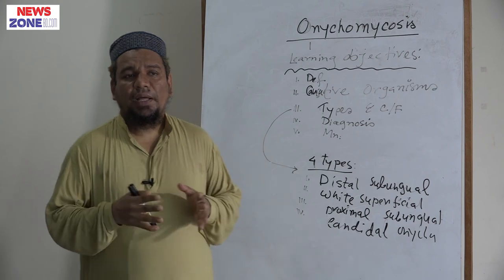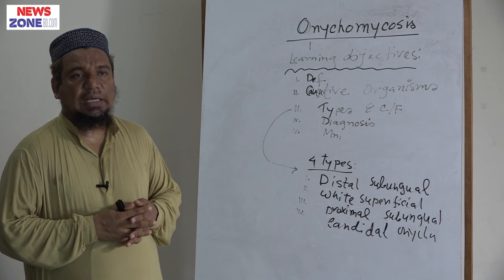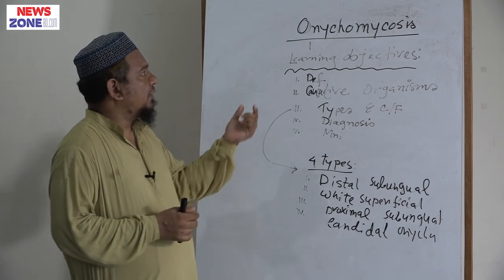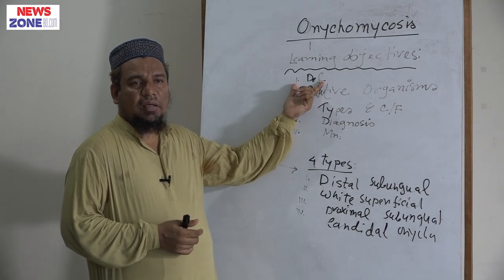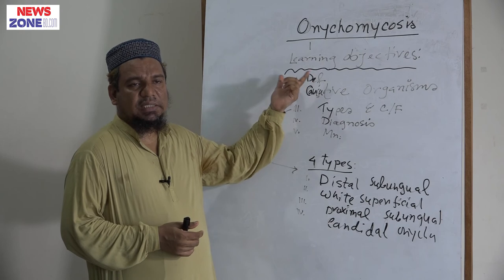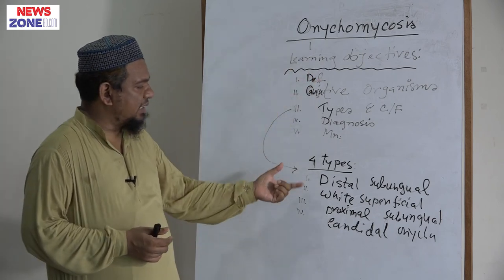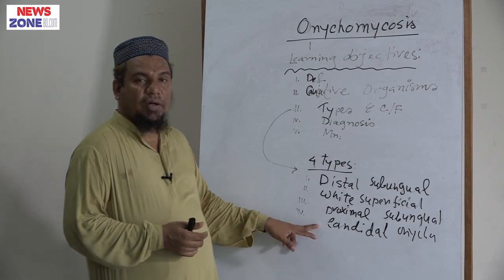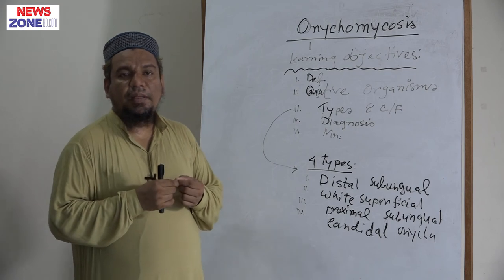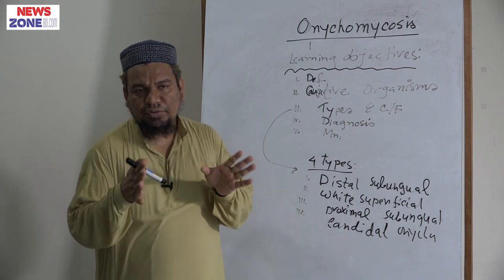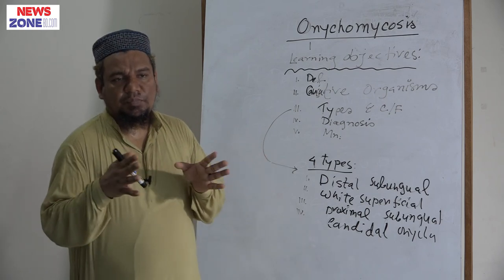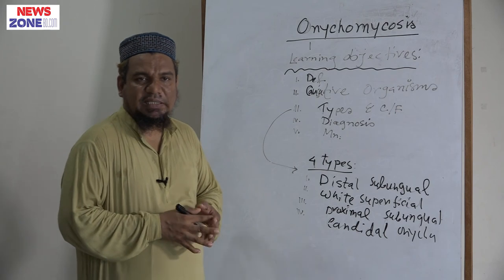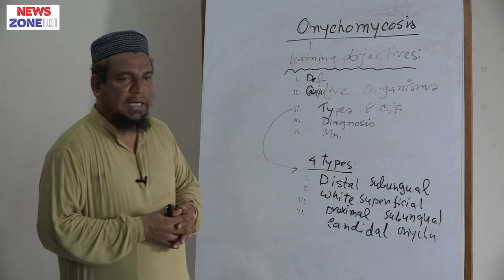So, to differentiate nail psoriasis or nail lichen planus from onychomycosis — let me repeat the lesson. Onychomycosis is a nail fungal infection, also called tinea unguium. It is of four types: distal subungual onychomycosis, white superficial type, proximal subungual, and candidal onychomycosis. It is diagnosed by clipping of nail material with potassium hydroxide solution and microscopy, examining fungal hyphae or spores, or by culture on specific media, or lastly histopathology with nail matrix biopsy.